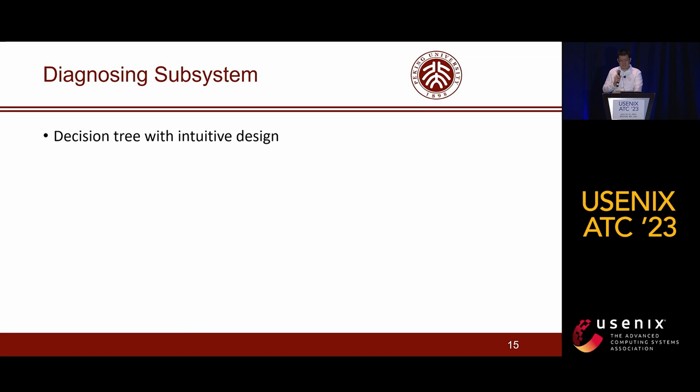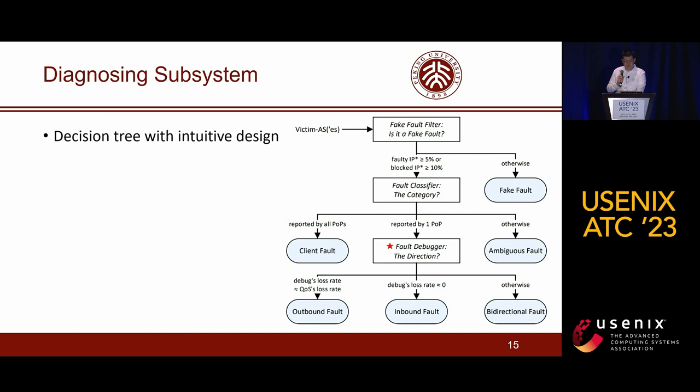The second subsystem is the diagnosing subsystem. It uses a decision tree with heuristics designed to achieve accurate and fine-grained fault localization and direction identification. The subsystem consists of three modules: the fake fault filter, the fault classifier, and the fault debugger.